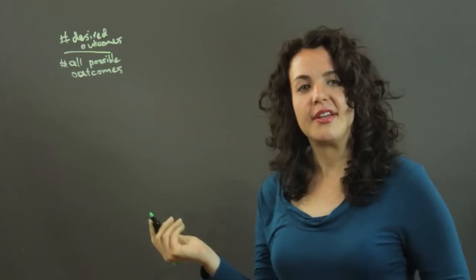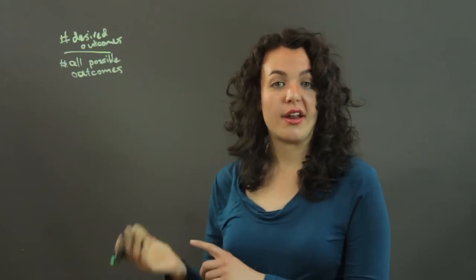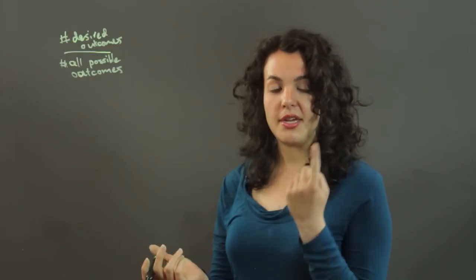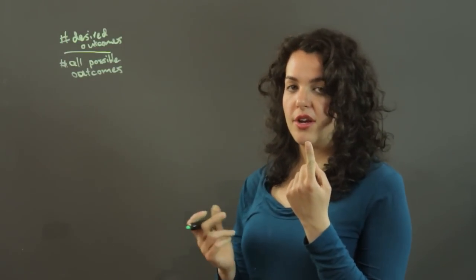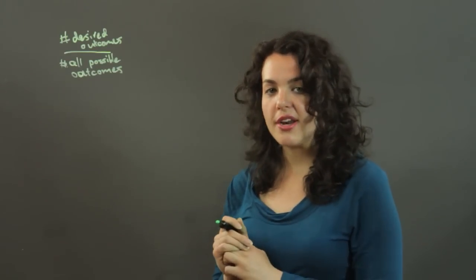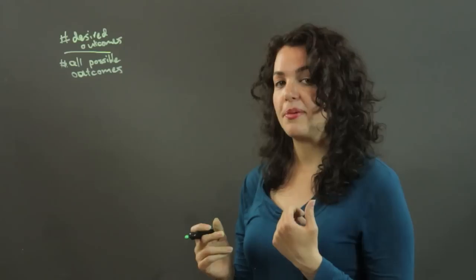For example, if you're going to flip a penny and you want the probability that you're going to get heads, well, you're looking just for one outcome, heads. And you have two possible outcomes, heads or tails. So one over two, you have a one-half probability of flipping heads.